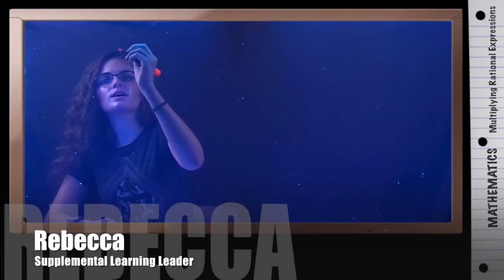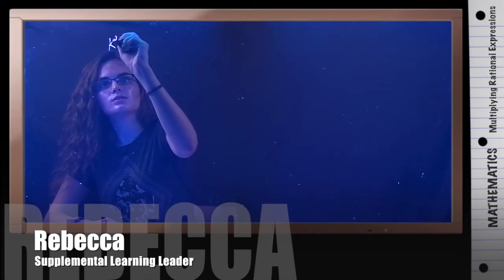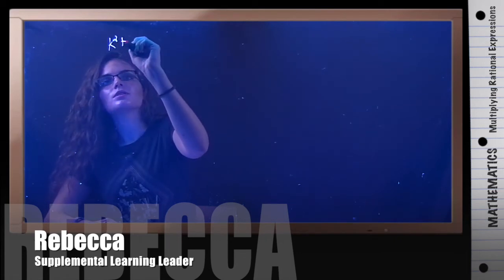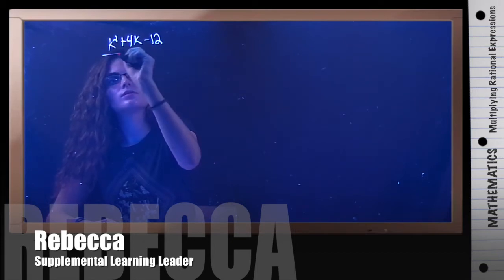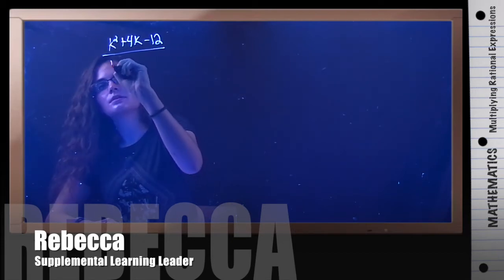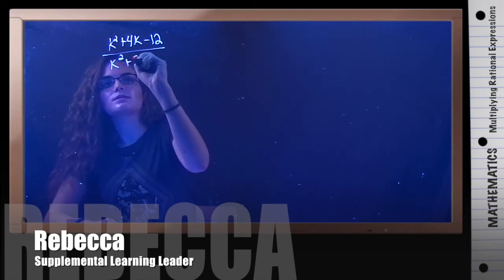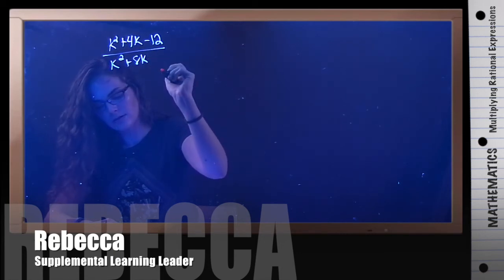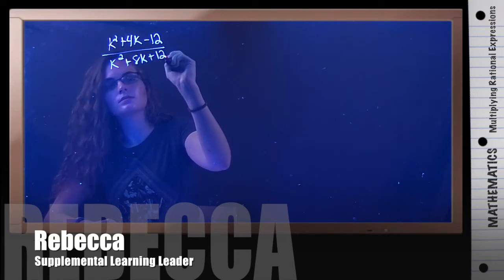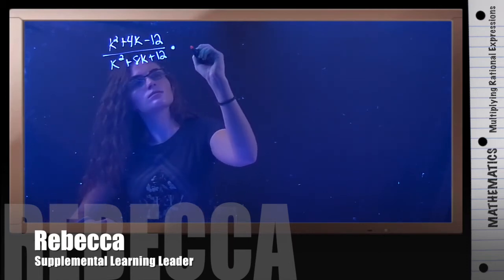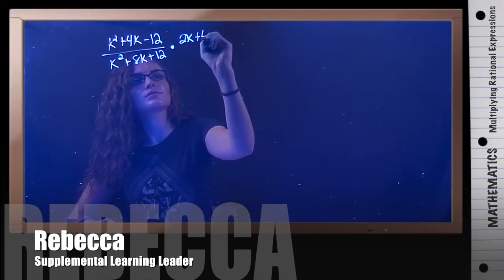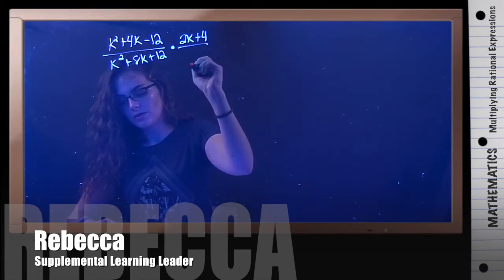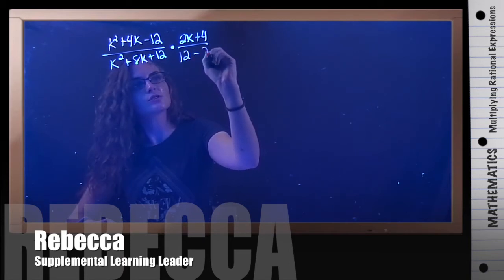For this example, we're going to multiply k squared plus 4k minus 12 over k squared plus 8k plus 12 times 2k plus 4 over 12 minus 2k.